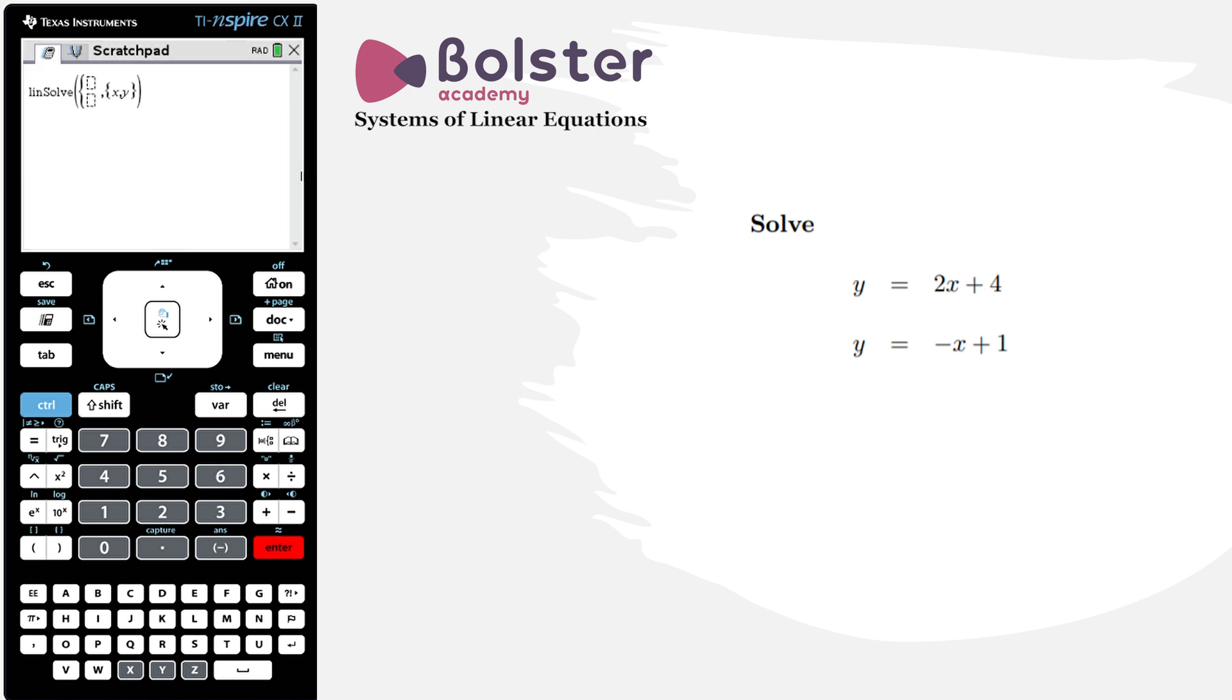Now within these two boxes I need to put in the two equations exactly as they are written. So it's going to be y is equal to 2x plus 4. Once I'm done on that I hit the down arrow to get to the next box, and I'm going to say again y is equal to minus x plus 1.